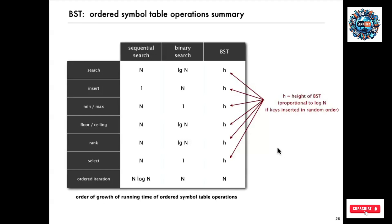Here's the operation summary for the ordered symbol table. Every one of those operations — ordered iteration is optimal and runs in linear time, and all the rest take time proportional to the height of the tree. If the keys are inserted in random order, the height is proportional to log N. Binary search tree is a simple and extremely effective data structure that can support all of these operations quickly — much better than binary search in an ordered array, which is not dynamic and slow for insertion. That's a look at binary search tree implementations of ordered operations when keys are comparable.